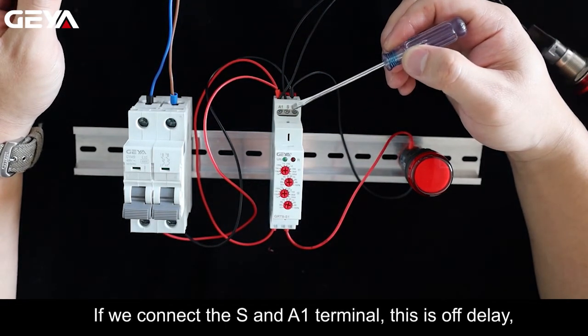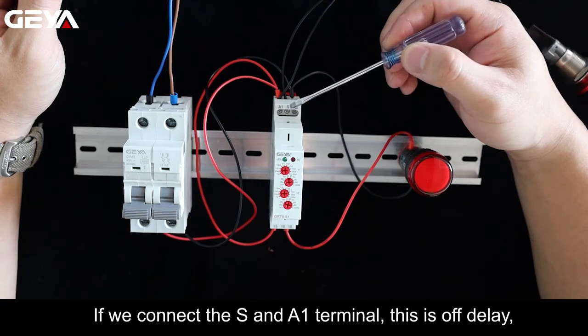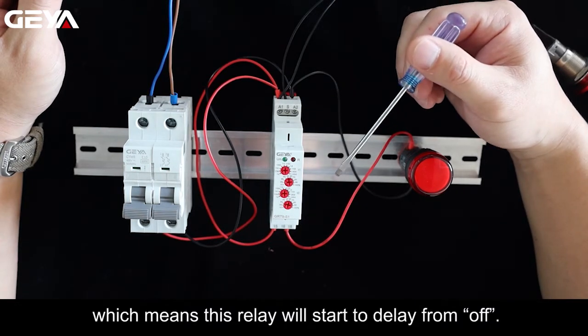If we connect the S in A1-Terminal, this is off delay, which means this relay will start to delay from off.